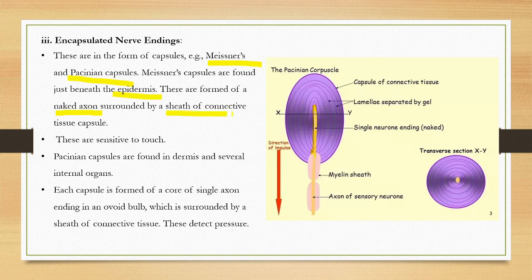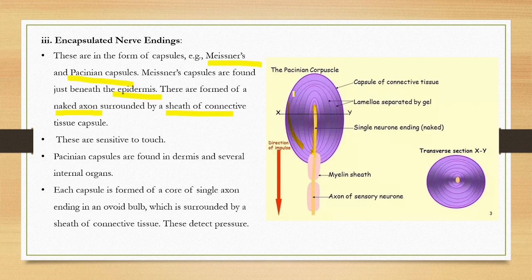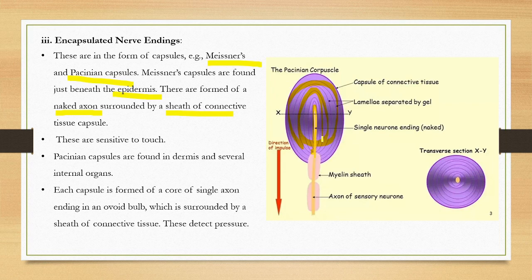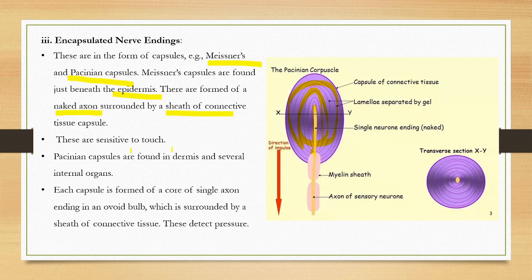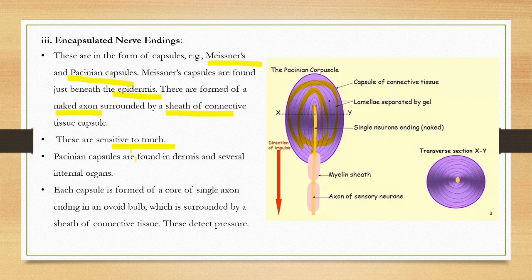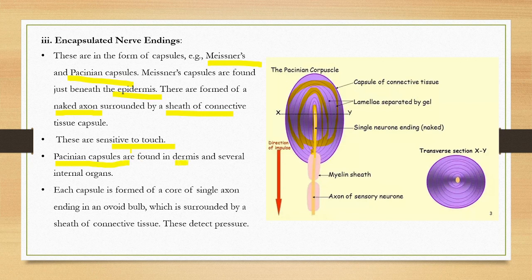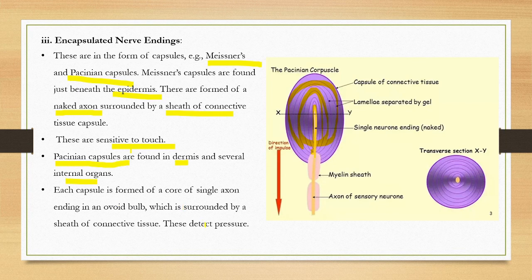There is a sheath of connective tissue capsule. These are the layers, connective tissue capsule. This is encapsulated nerve ending. The function of encapsulated nerve ending is sensitive to touch. The capsule is found in the dermis and several internal organs. They are also able to detect pressure.